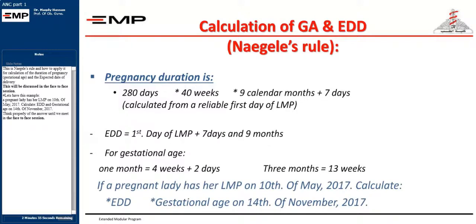Let's have this example: a pregnant lady has her LMP on the 10th of May, 2017. Calculate gestational age on the 14th of November, 2017. Think properly of the answer until we meet in the face-to-face session.